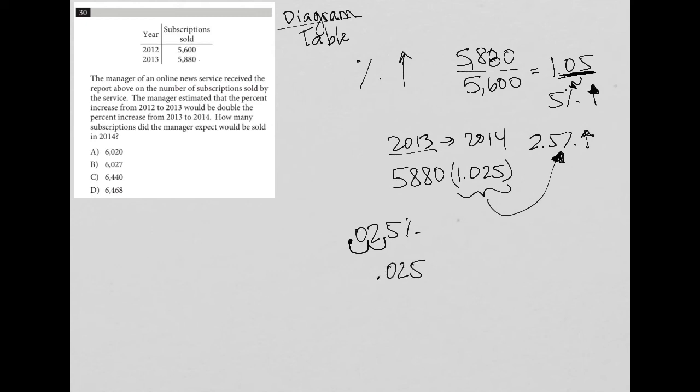And since we're increasing, we're adding that to 100%. The decimal on 100 is at the end of the number. Move that to the left twice. We're at 1. So that's where the 1 plus 0.025 becoming the 1.025 comes from. And now I just have to go to my calculator and say, what is 5,880 times 1.025, or the 102.5% increase?